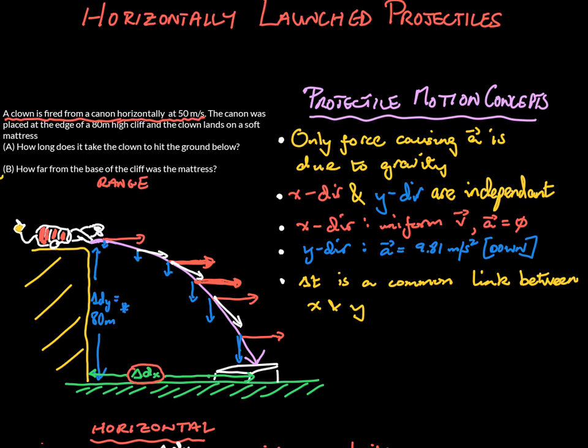The X and Y directions are independent, but they are joined in unholy matrimony by Delta T. Delta T is a common link between the X and Y components.